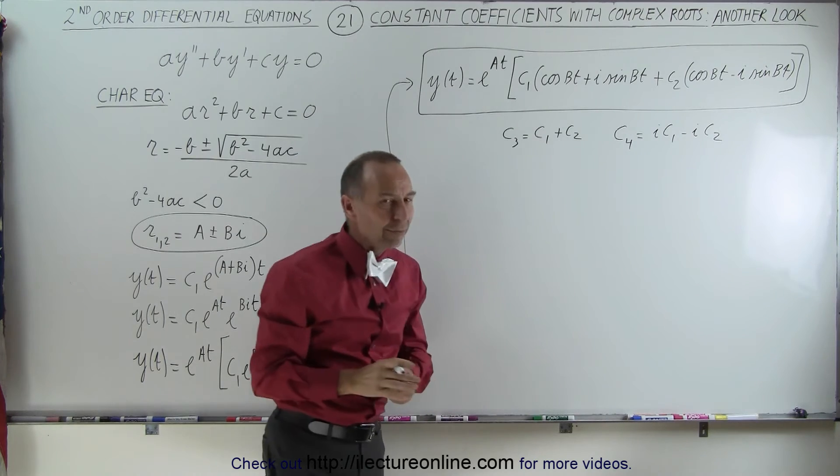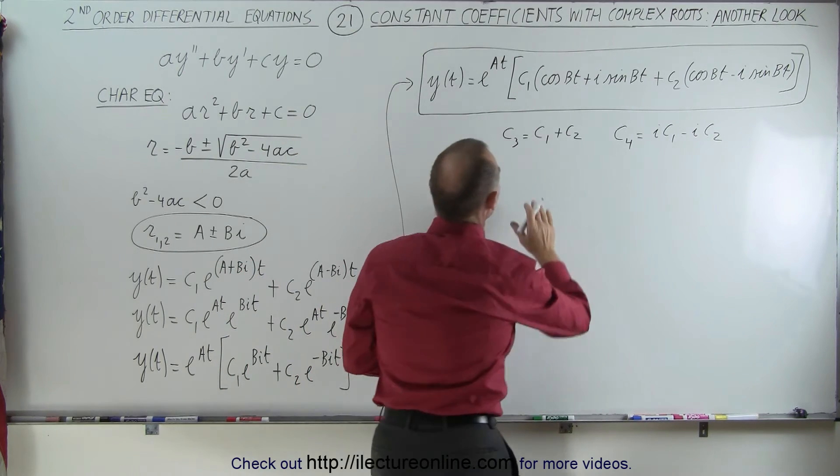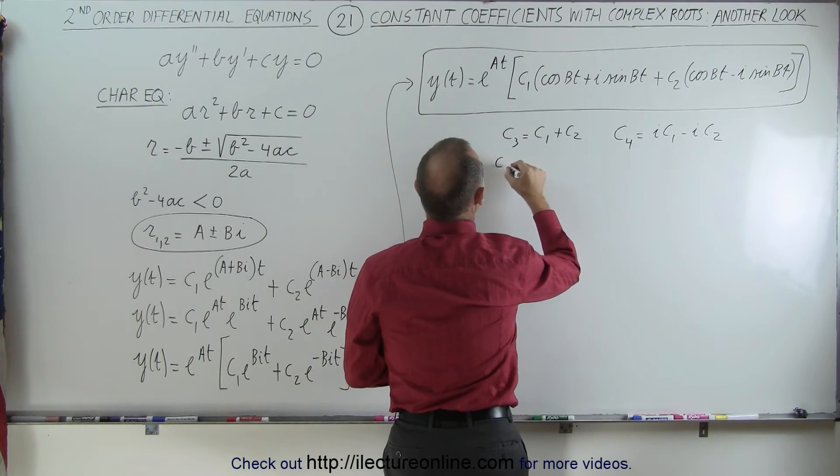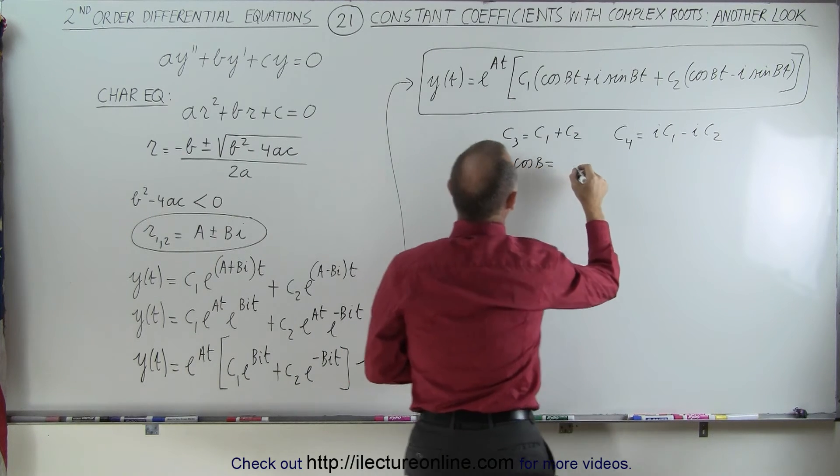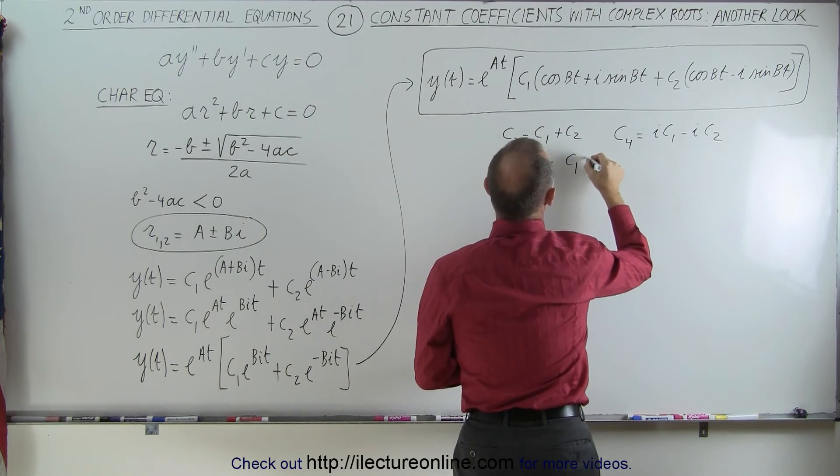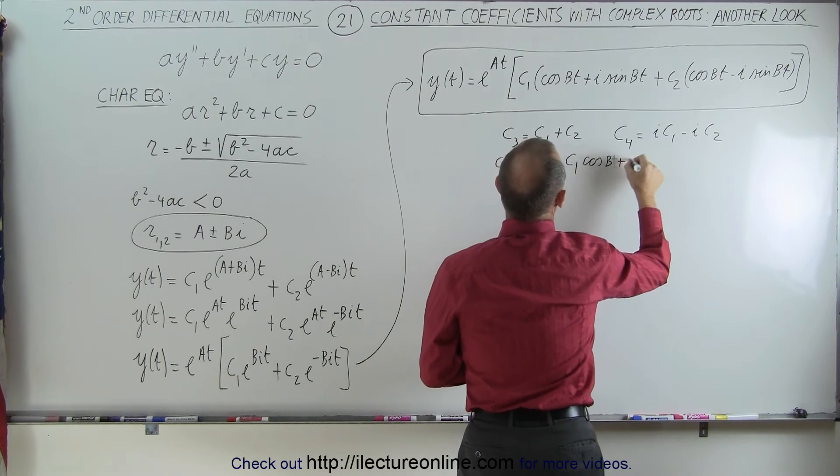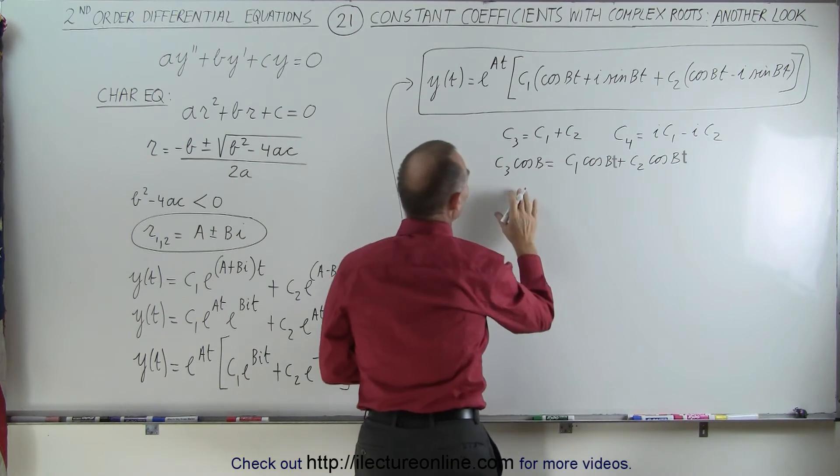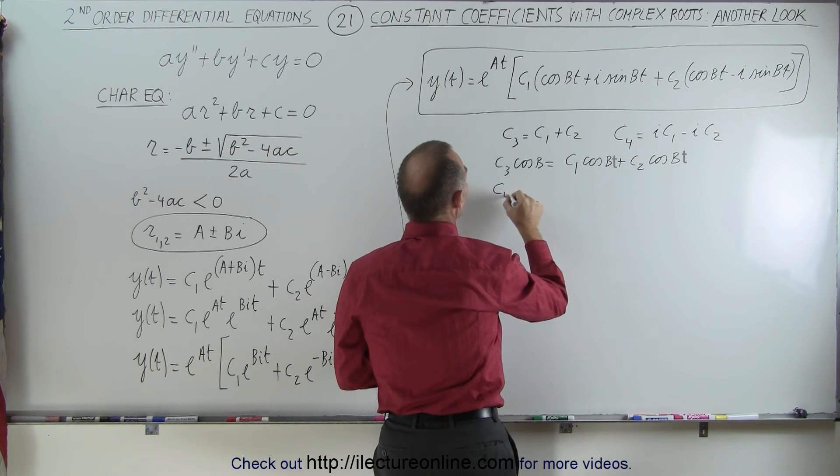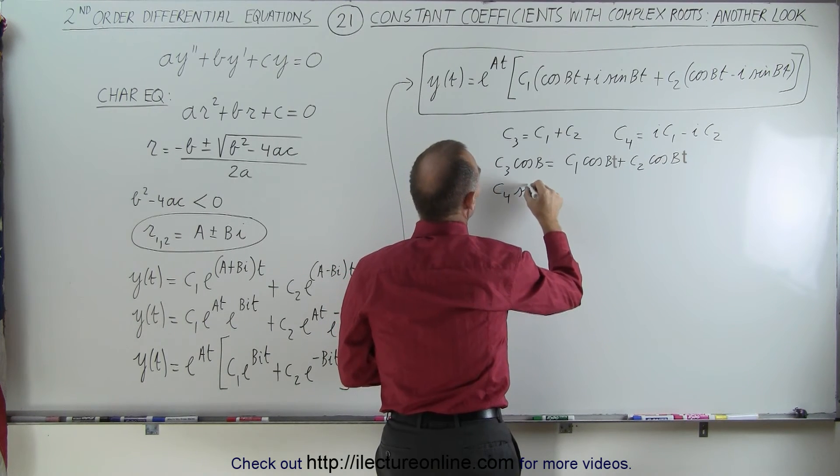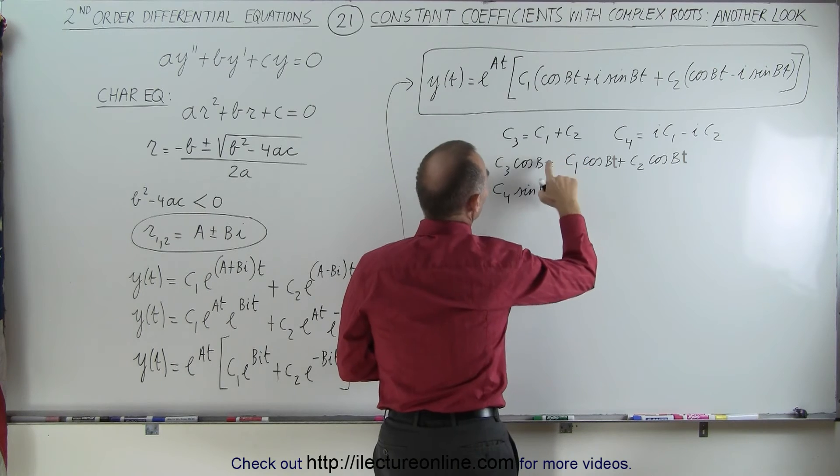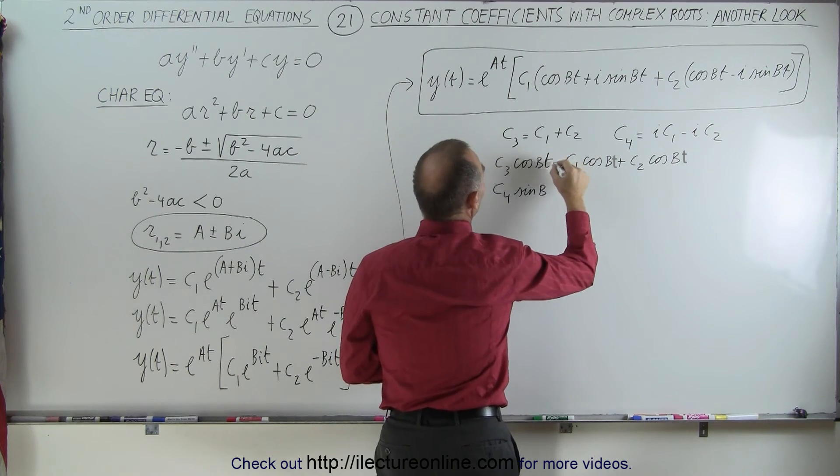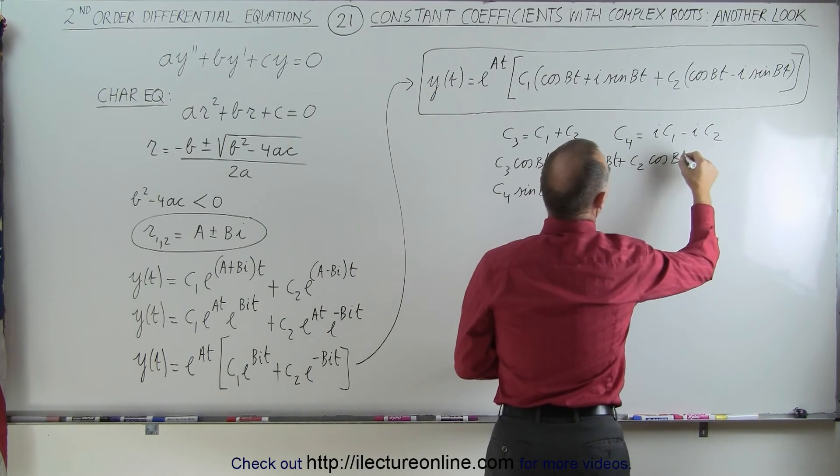If we do that, if we make that substitution, then we can write c3 times the cosine of bt as the sum of c1 times the cosine of bt plus c2 times the cosine of bt. And we can do the same for the sine. We can say that's c4 times the sine of bt. And of course, I can add the t to that and make it a little bit more complete.